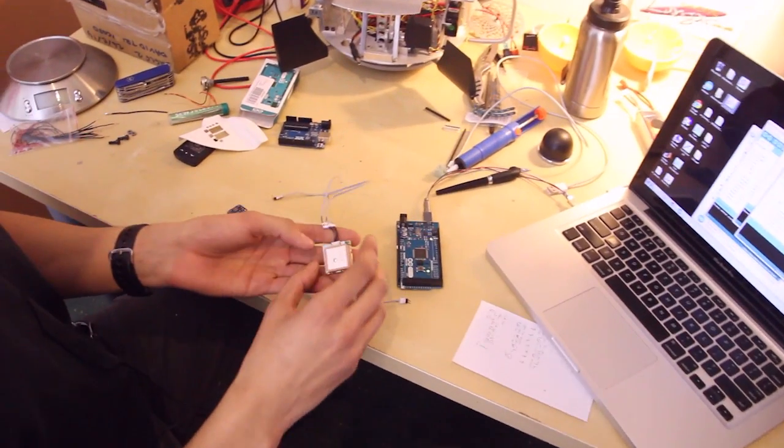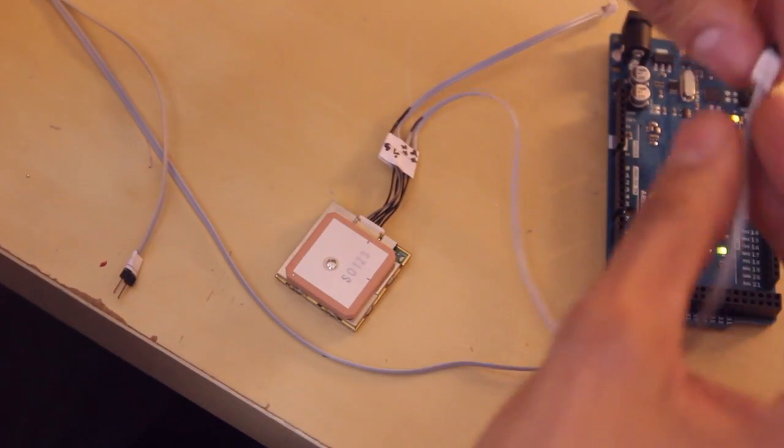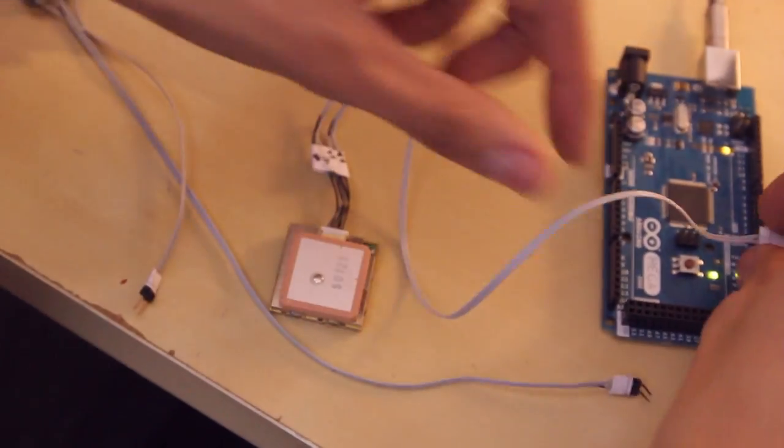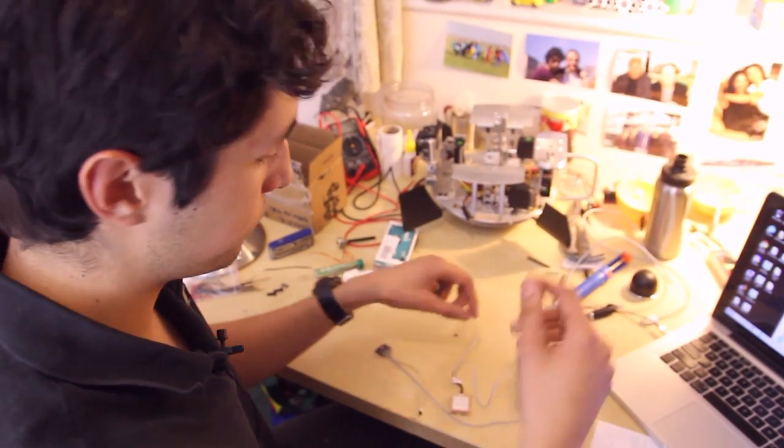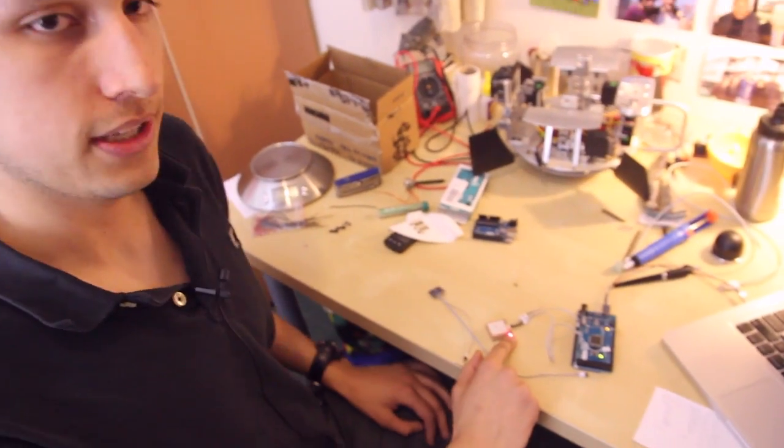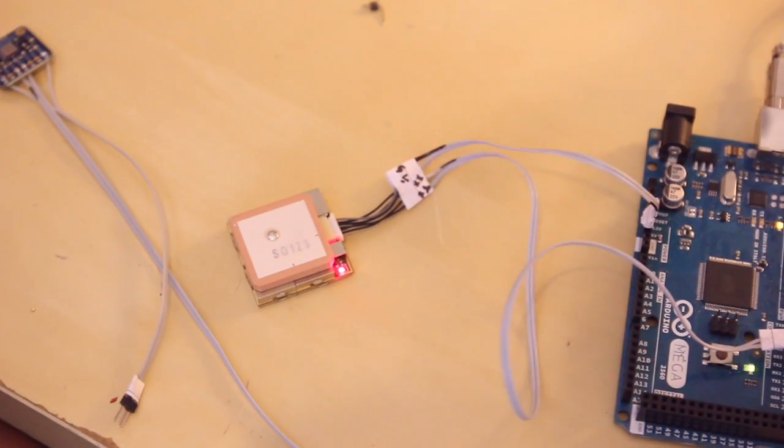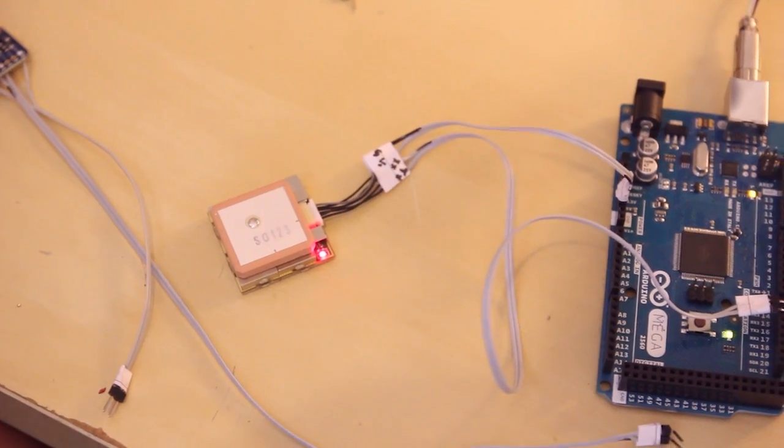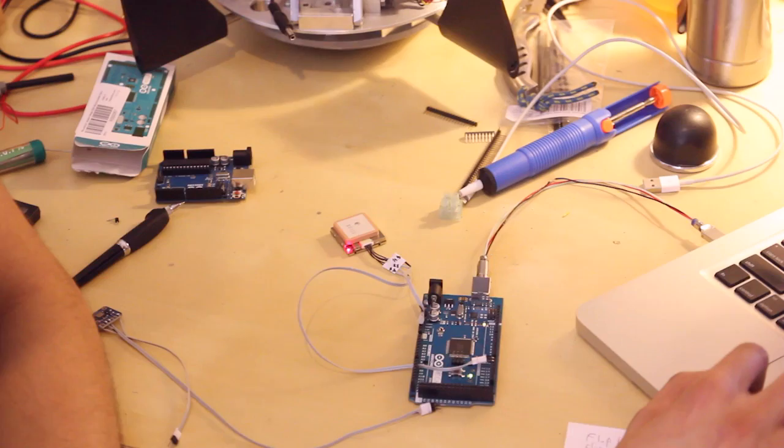So this is our GPS board. The pink square is the antenna, and it's got a processor in it to calculate position from the time signal sent out by satellites. The steady red light means it's searching for satellites, so when that starts flashing it means we've got something.